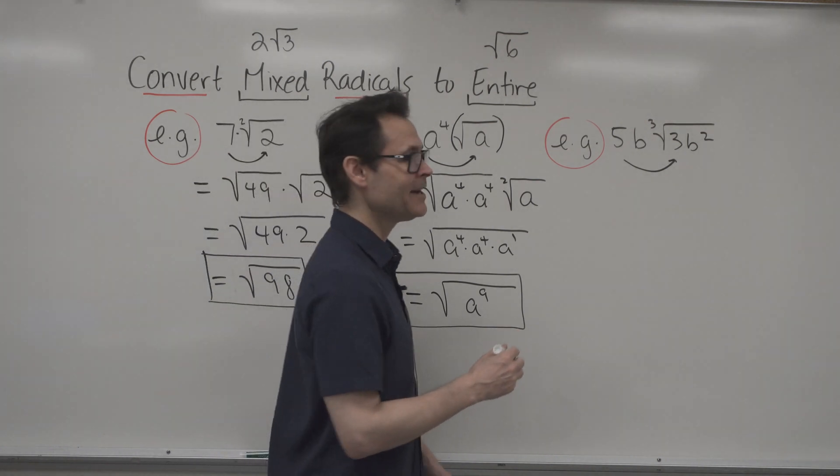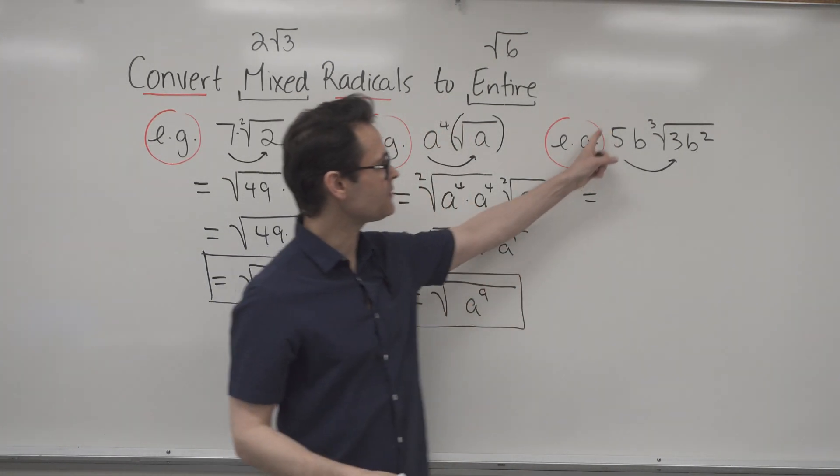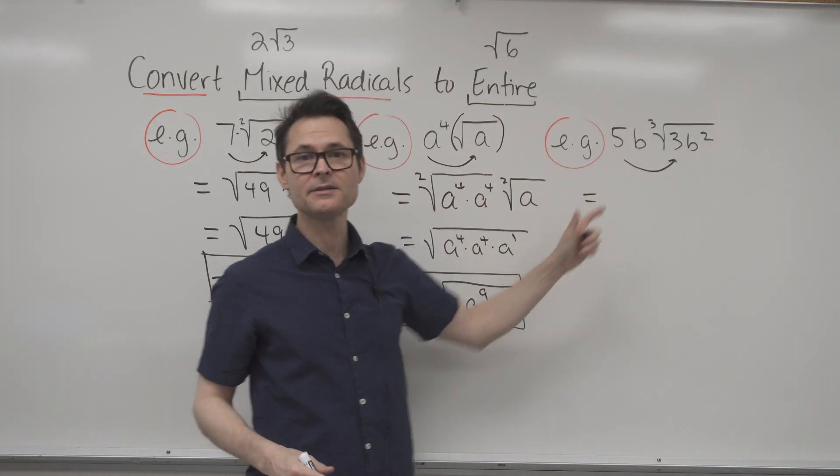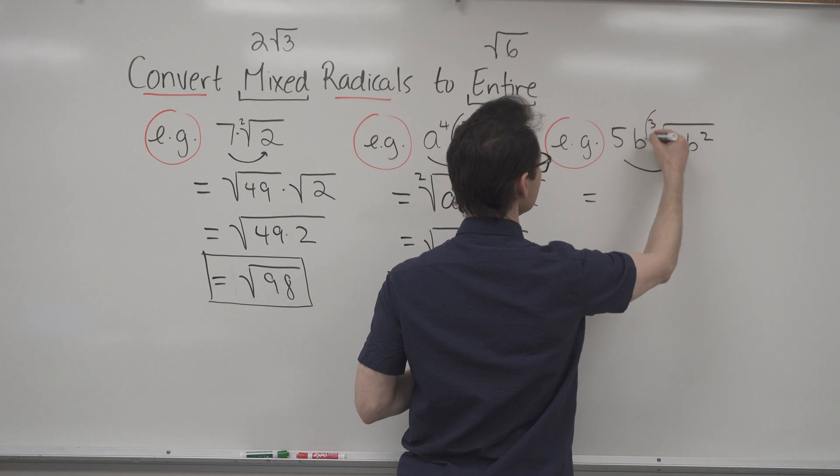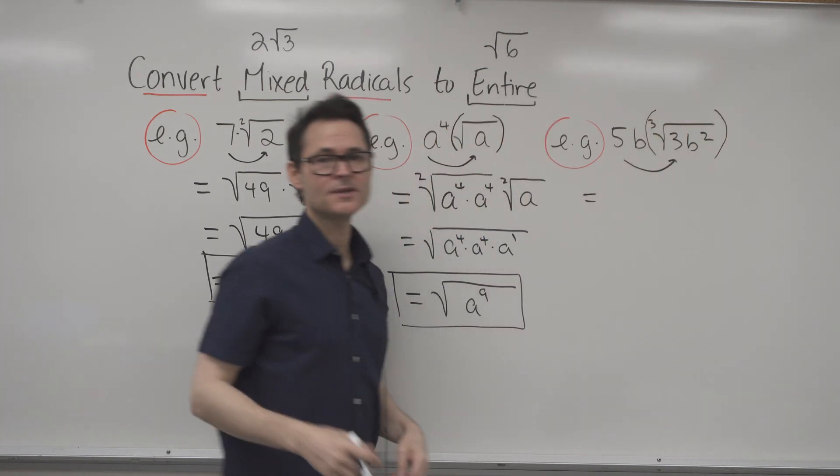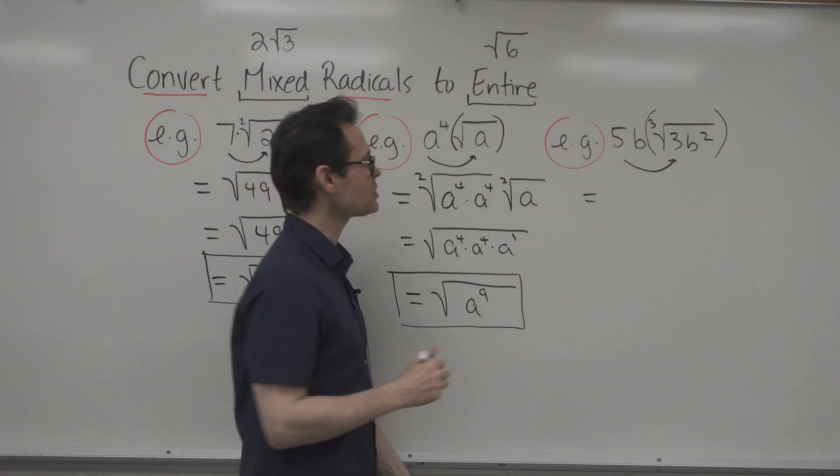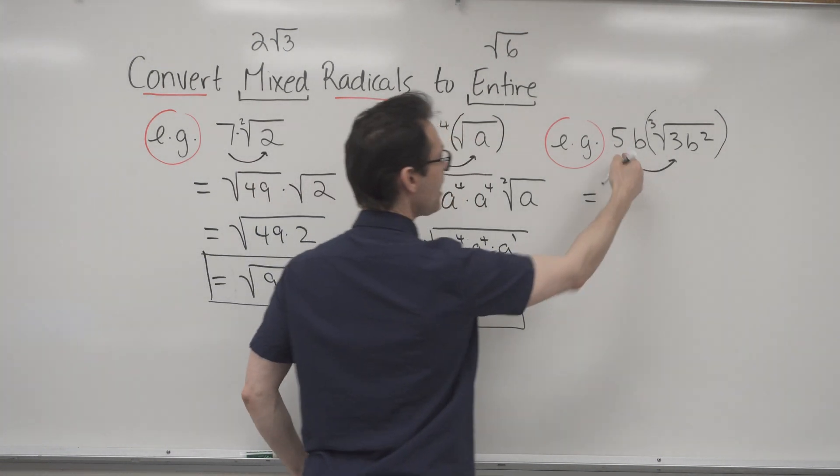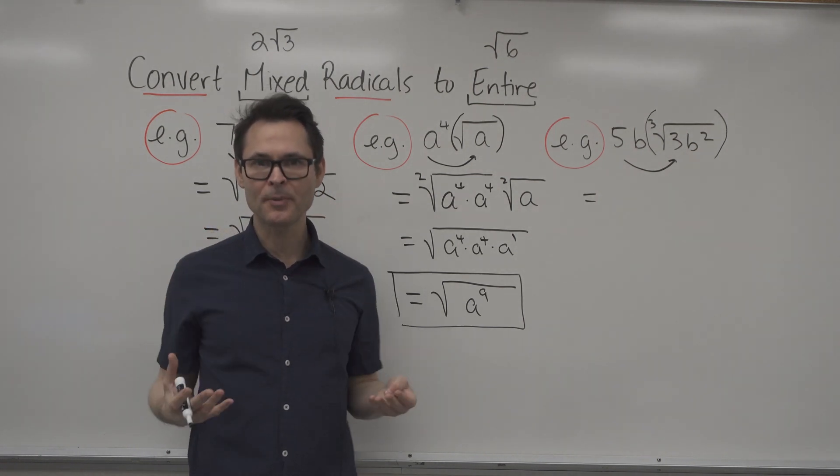All right, and then the third one. Again, the direction here is to take the number on the outside and put it on the inside to write it as an entire radical. And in this case, the 3 is the index. So this is cube roots. So we have square roots, cube roots, fourth roots, and so on. And so this 5B on the inside has to show up as a triple.